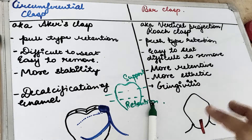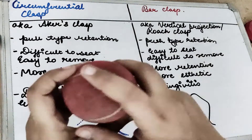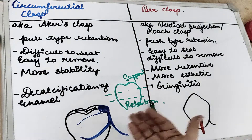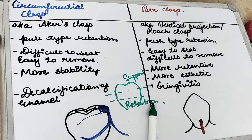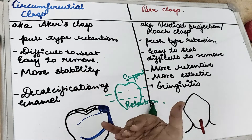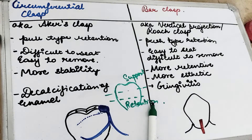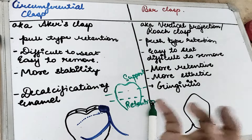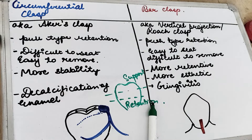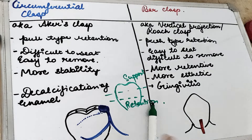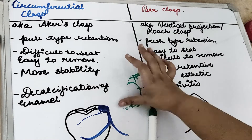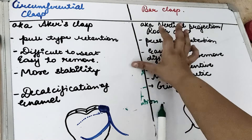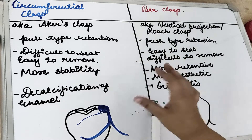The circumferential clasp has got a retentive arm and an opposite reciprocating arm which reciprocates the forces. The retentive arm is the arm which does the purpose of retention. We have already covered the parts of the circumferential clasp and the bar clasp in the playlist.